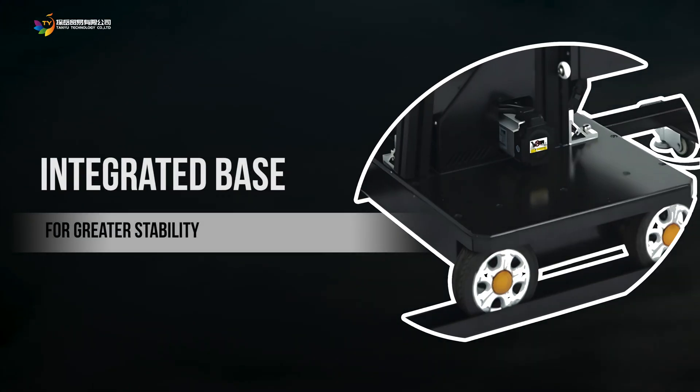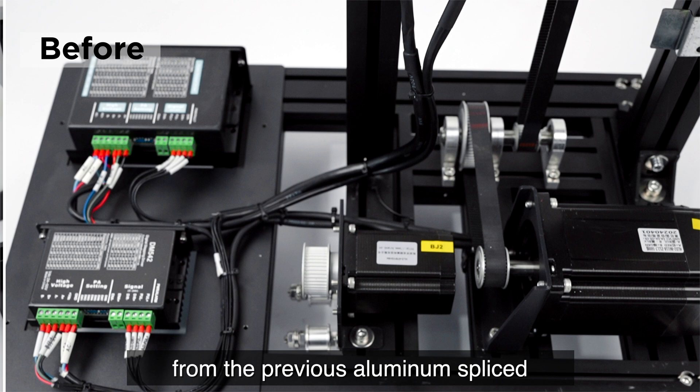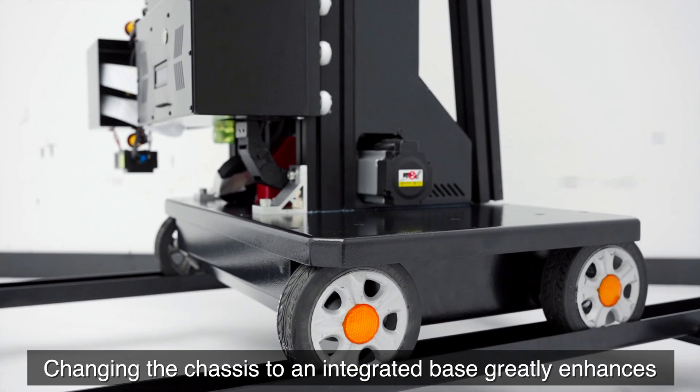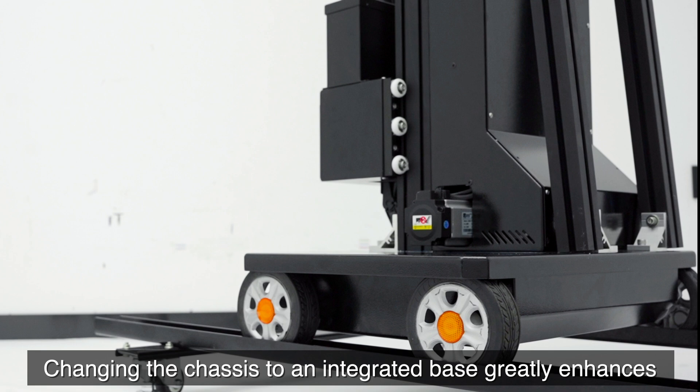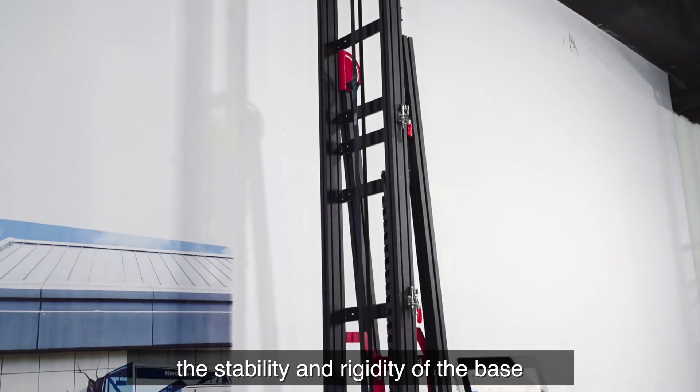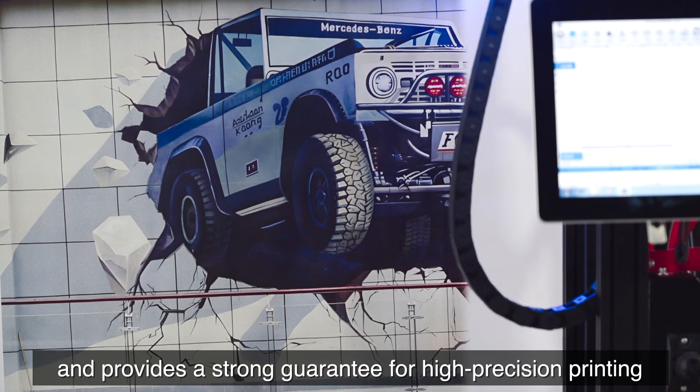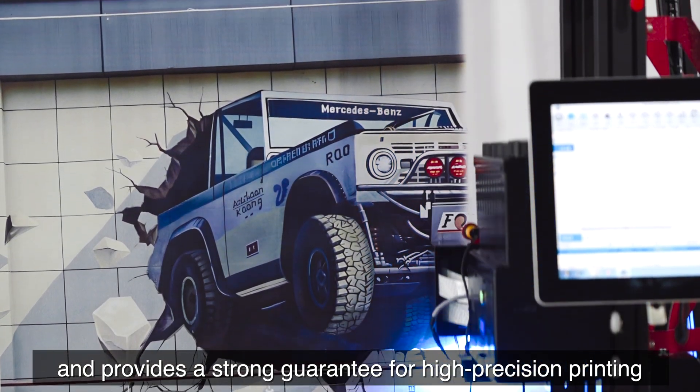Integrated Base for Greater Stability. The base has been changed from the previous aluminum spliced base to a steel integrated base. Changing the chassis to an integrated base greatly enhances the stability and rigidity of the base, keeps the equipment stable during operation and provides a strong guarantee for high-precision printing.